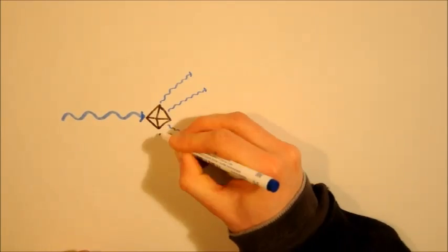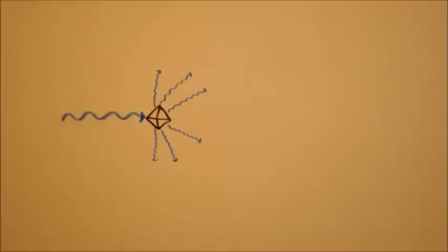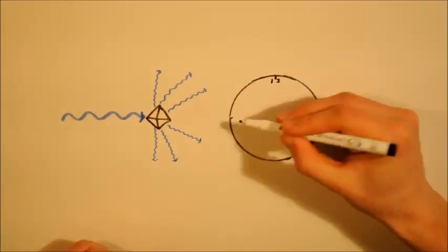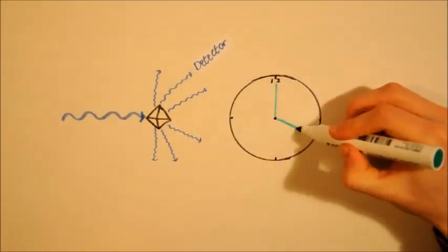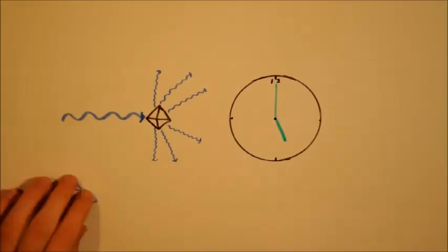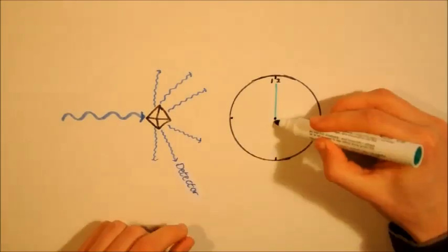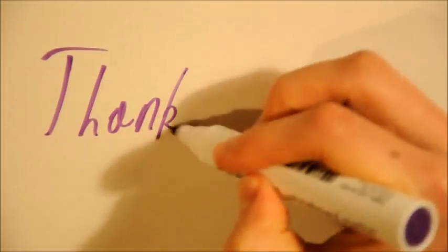Anyway, what you're actually creating is a time-averaged electron density map of your molecule. High concentration areas correspond to atomic positions, and the actual electron density corresponds to the types of atoms themselves.